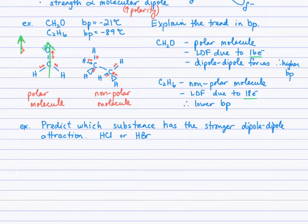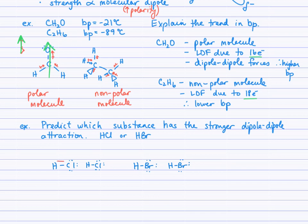A second example: predict which substance has the stronger dipole-dipole attraction — HCl or HBr. I've drawn two molecules of each to emphasize the dipole-dipole attraction occurring between molecules. Looking at the polarity of the HCl bond versus the HBr bond — with chlorine being closer to fluorine on the periodic table, chlorine has higher electronegativity than bromine. This sets up a larger bond dipole vector for HCl than for HBr, showing that the HCl molecule is more polar than the HBr molecule.